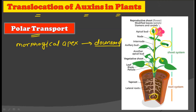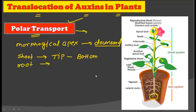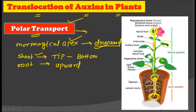Whenever auxin is synthesized at the apex, it moves downward throughout all parts of the plant body so that wherever there is a requirement of auxin it will be provided. In the shoot, auxin moves from tip to the bottom of the plant. However, in the root, it translocates from the apex of the root to the base, meaning the root carries auxins in an upward direction while the shoot carries auxins downward.